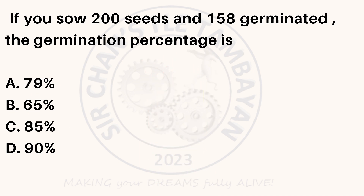If you sow 200 seeds and 158 germinated, the germination percentage is: A. 79%. B. 65%. C. 85%. D. 90%.